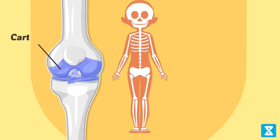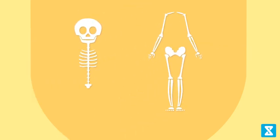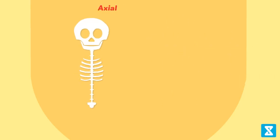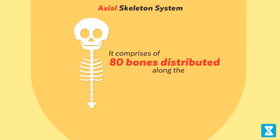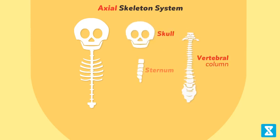These bones form a framework with several cartilages, which is known as the skeletal system. It is grouped into two principal divisions: the axial skeleton and the appendicular skeleton. The axial skeleton comprises 80 bones distributed along the main axis of the human body. The skull, vertebral column, sternum, and ribs constitute the axial skeleton.